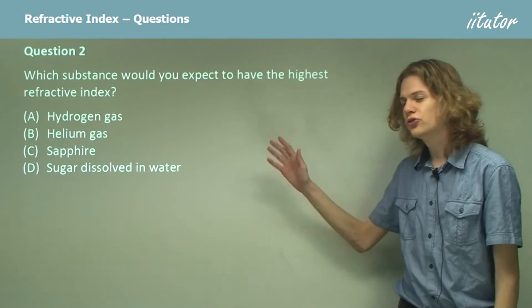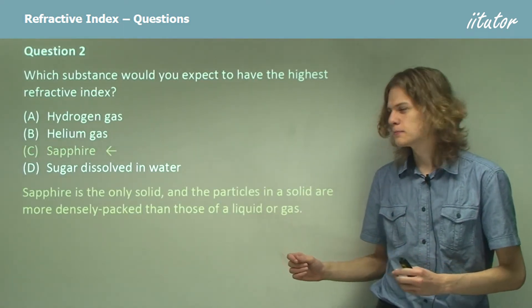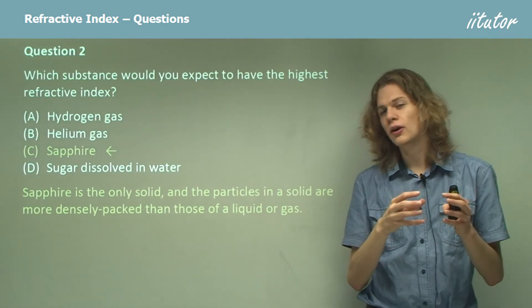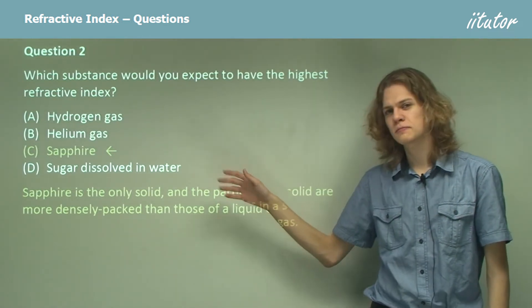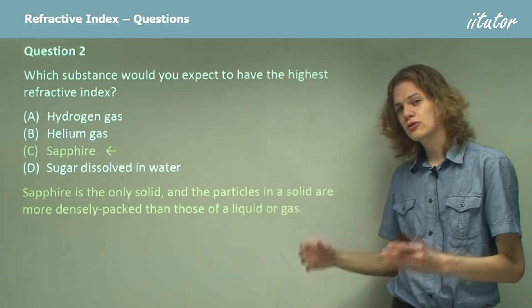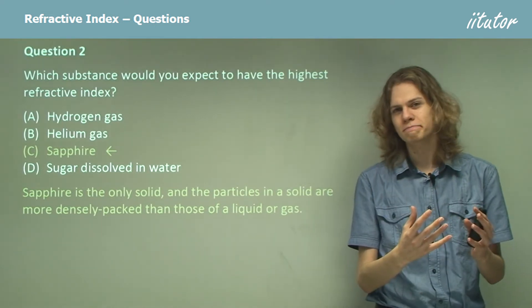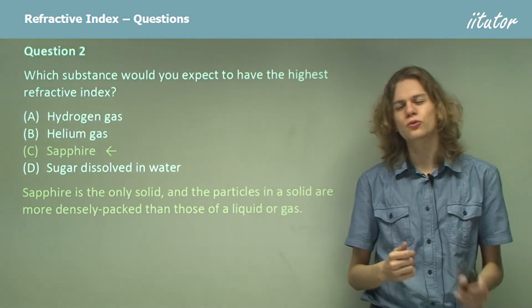That is, of course, sapphire. Sapphire is the only solid out of these four choices. Solids have a much denser particle configuration than any of the other options, including the sugar in solution. This means that because they're more densely packed, light travels more slowly through the sapphire. And so the sapphire has the highest refractive index.